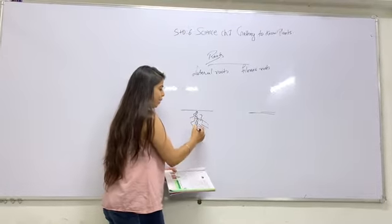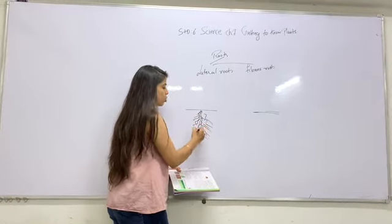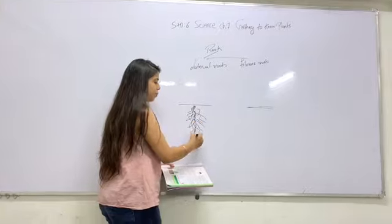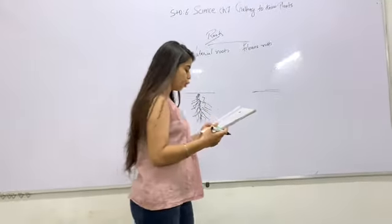In a taproot system, there is a main central root, and from that main root, smaller lateral roots arise.